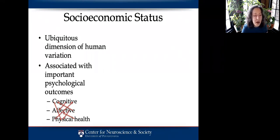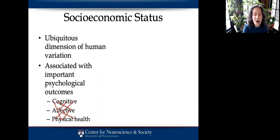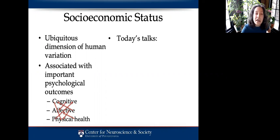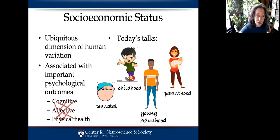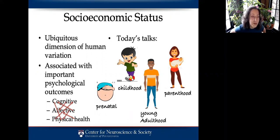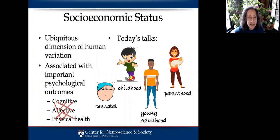As you'll see, measures of physical health and immune system response have an impact on affective well-being, for example. Today's talks are going to cover the relation between SES and these cognitive, affective, and physical health parameters at four different stages of life: as a fetus, as a child, as a young adult, and as a parent.